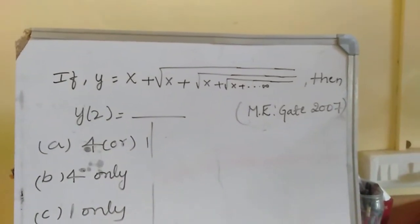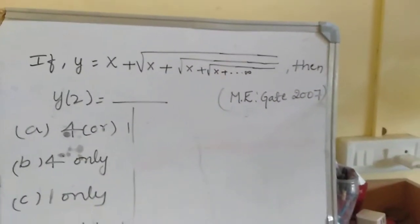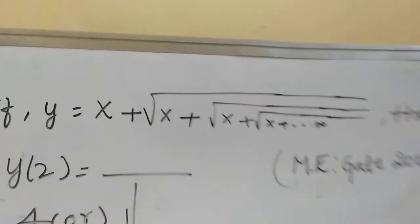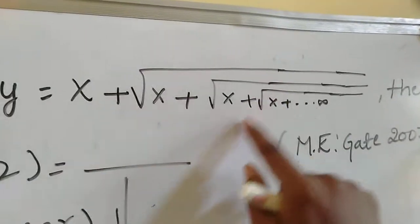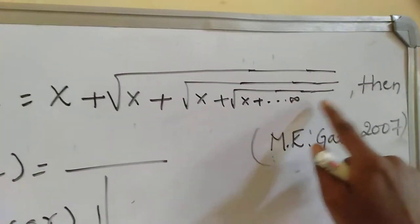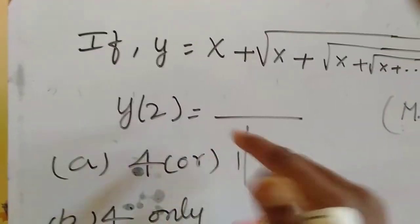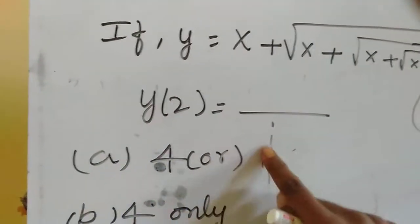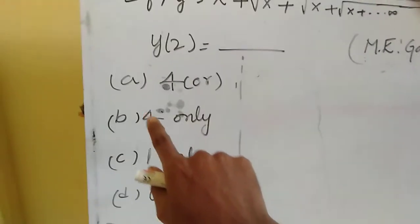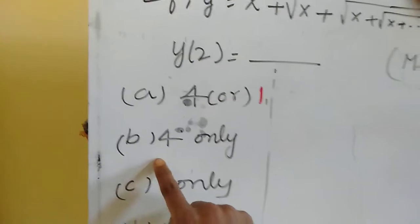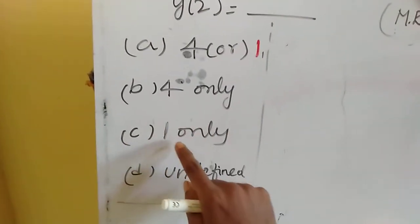In this video I am discussing a mechanical engineering GATE 2017 question. We see that if y is equal to x plus root of x plus root of x plus root of x, and so on to infinity, then y up to what value? Four options are given: option A is 4 or 1, option B is 4 only, option C is 1 only, and option D is undefined.